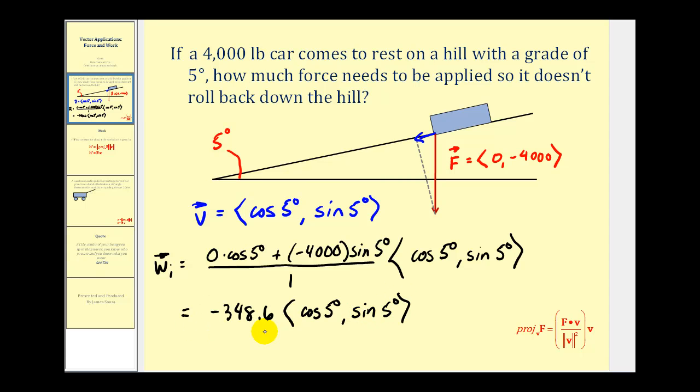So the magnitude of our projection will give us the amount of force needed to prevent this car from rolling back down the hill. So here we have a scalar times a unit vector. So the magnitude of our projection is going to equal positive 348.6 and this would be pounds. This would be the amount of force needed to keep this car from rolling backwards down a hill with a grade of five degrees.